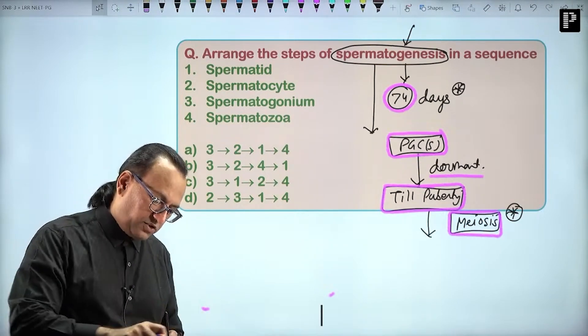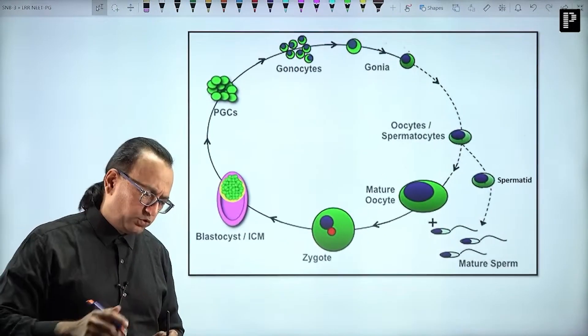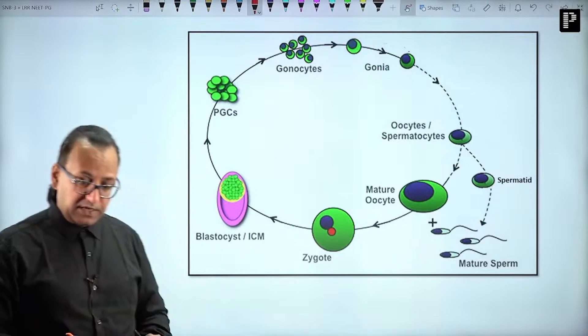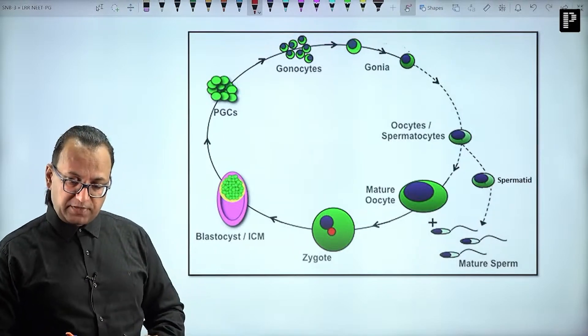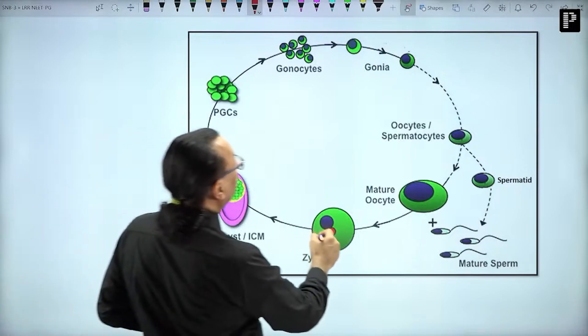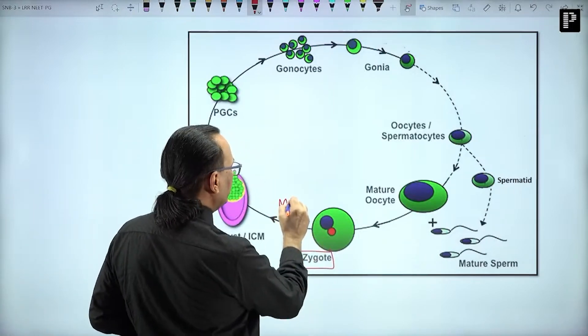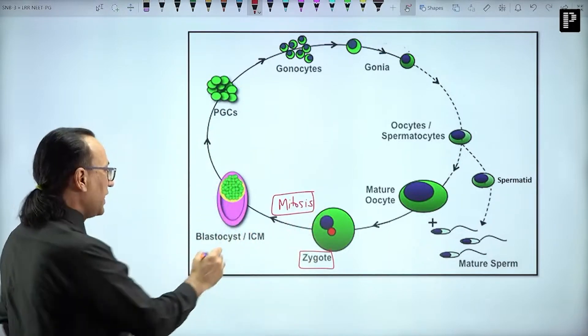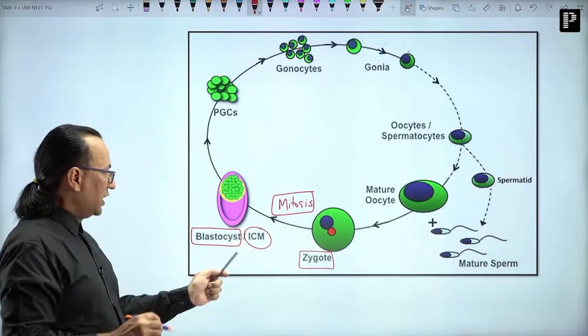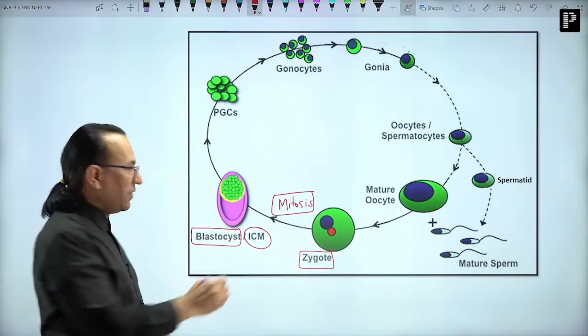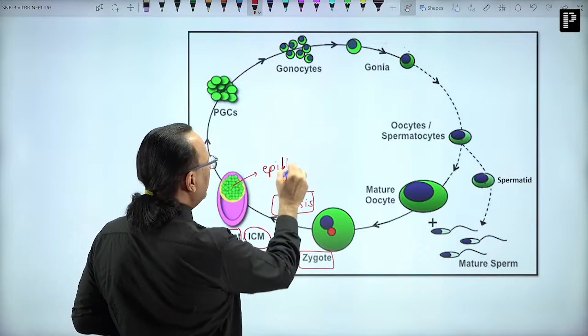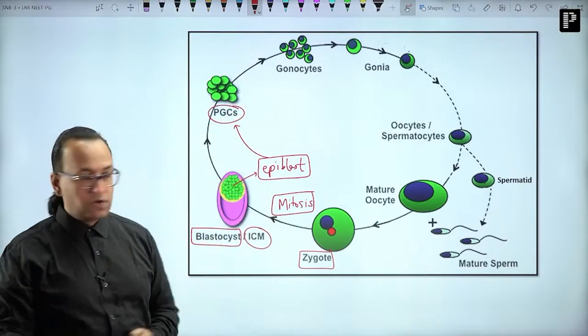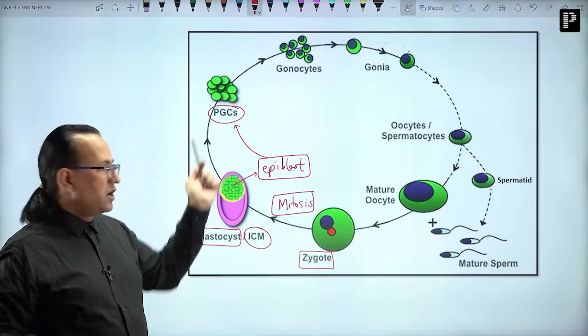Now before we start marking the answer, look at this diagram which you would have seen me teaching quite often, but I am doing it again. Quick revision. You need to understand that we are starting with the zygote, and this zygote is undergoing mitosis. The zygote will give us the blastocyst, and in the blastocyst we will have inner cell mass with the epiblast, and these epiblast cells are going to give primordial germ cells.